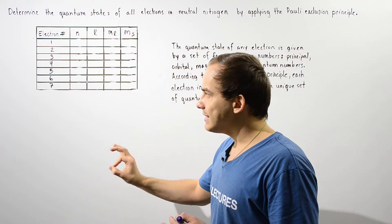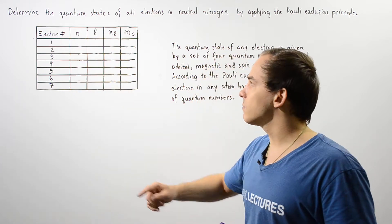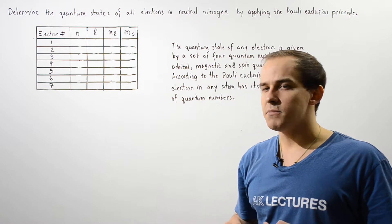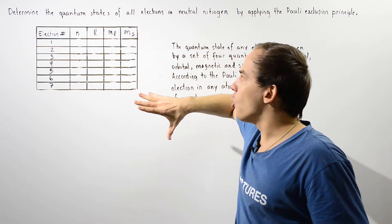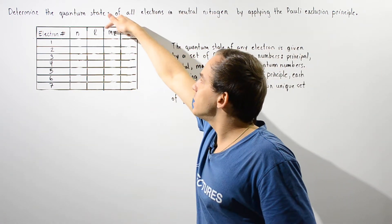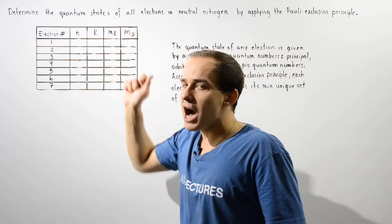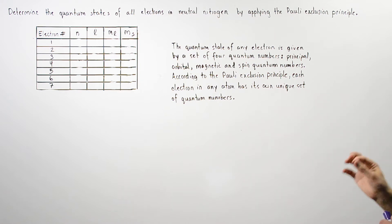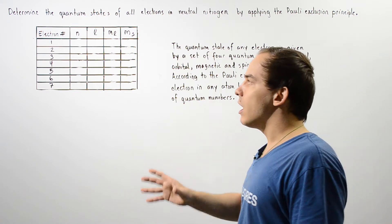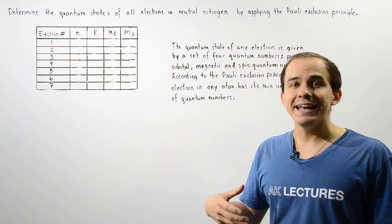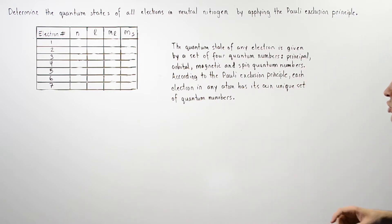Each electron exists in its own quantum state, given by a set of four quantum numbers: the principal quantum number n, the orbital quantum number L, the magnetic quantum number ML, and the spin quantum number MS. The spin number is always either positive one-half or negative one-half. The number of possible ML values depends on L, and L depends on n. By the Pauli exclusion principle, every electron has its own unique set of four quantum numbers, so any given orbital has a maximum of two electrons.